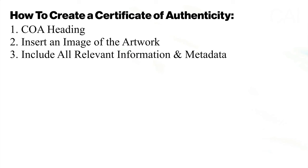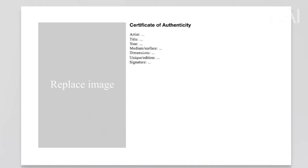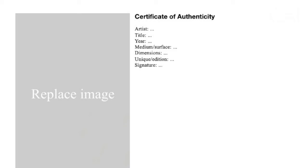Step three: include all relevant metadata and information. Make sure to enter the required metadata in the COA, starting with the artist's name and surname, then the title of the artwork, and the year in which it was created. Write down the medium and surface, and document all mediums used — later this can be important for conservatory purposes, future catalogue raisonnés, or institutional exhibitions. Include the artwork's dimensions, writing down all x, y, and z dimensions. Finally, note whether the artwork is unique or part of an edition, and if the latter, specify the edition. Optionally, you could also specify where and how the artwork is signed.